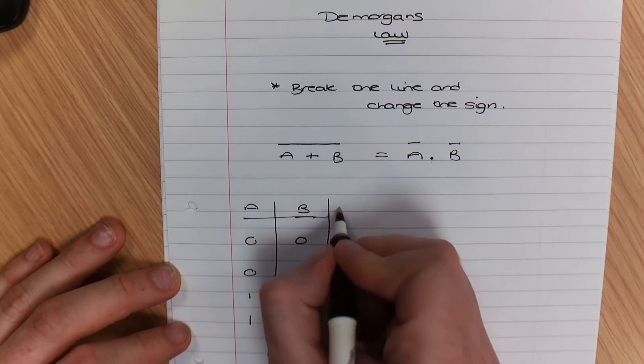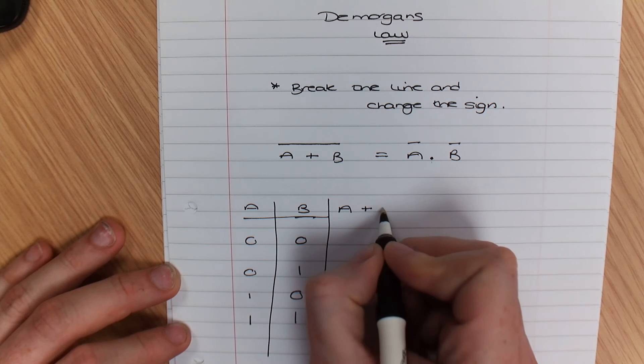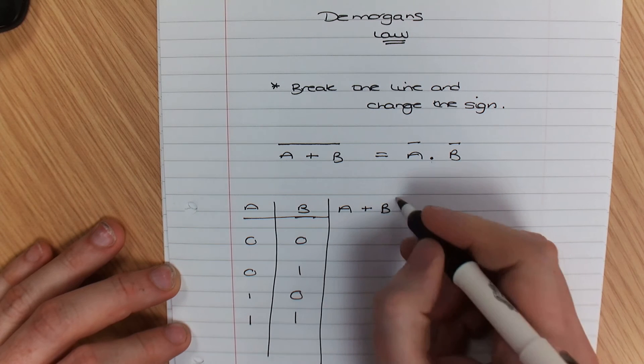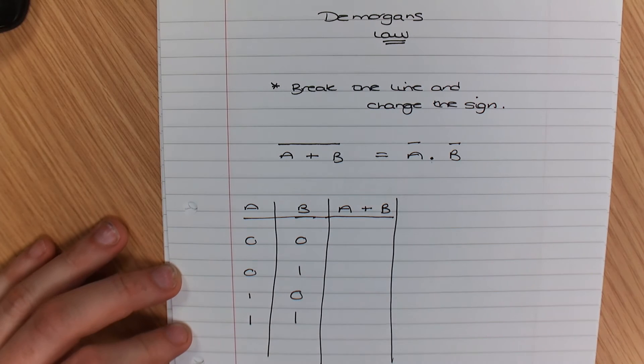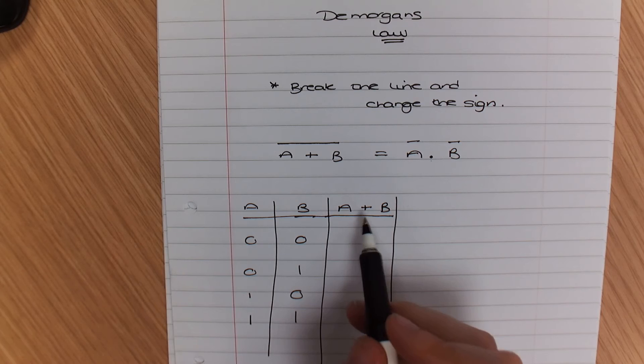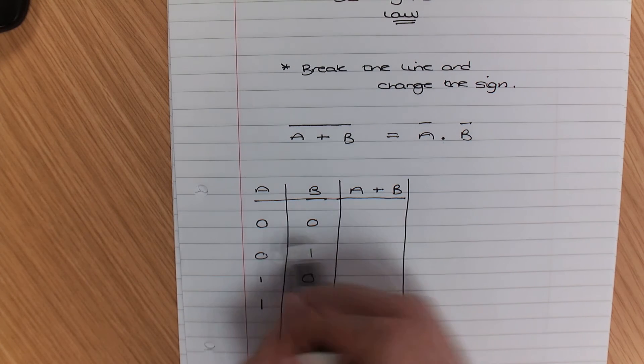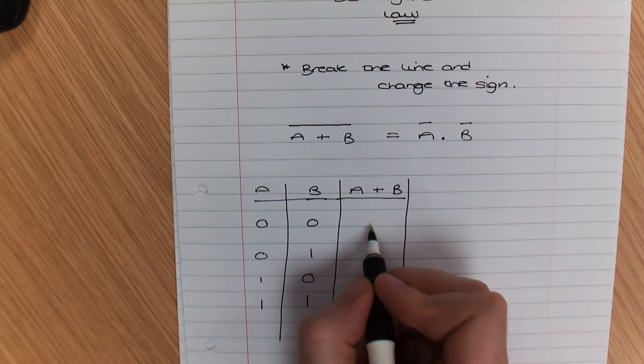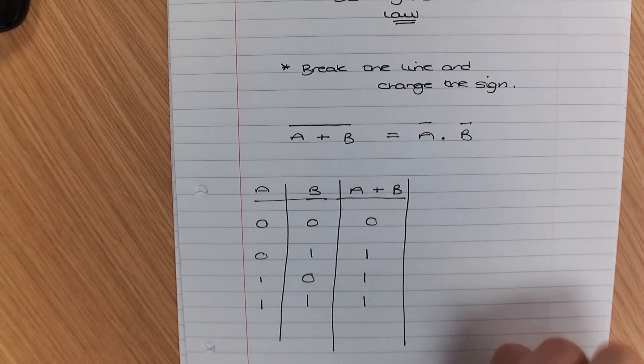We've got A or B. So let me just demonstrate how A or B works. An OR gate is that one switch must be on. So in this case, it's 0, 1, 1, 1. Now, let's carry on across the page here.